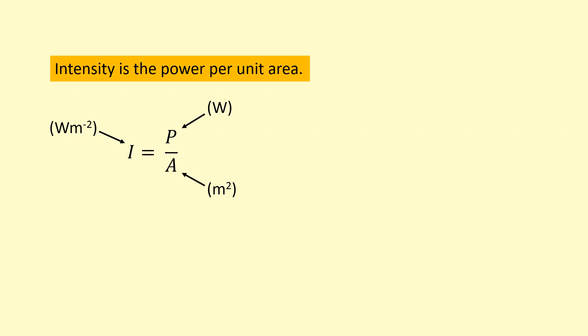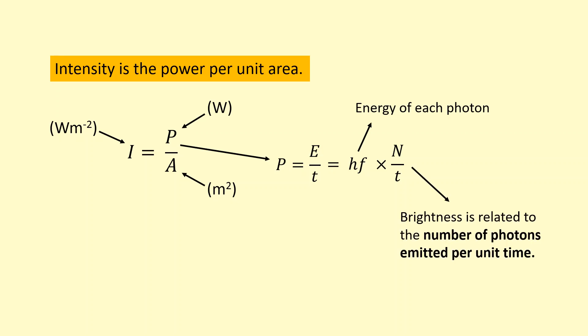Now the definition of power is energy per unit time so it's given this equation and in the case of the light here the energy depends on firstly the energy of each photon and the number of photons being emitted per unit time which is basically the brightness. So putting these together we can see the intensity depends on both the energy of each photon and the number of photons being emitted per unit time.